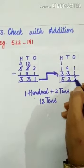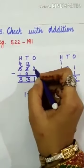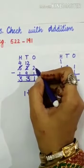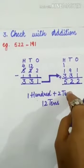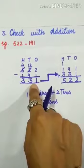So we got 522 after addition, which is same with this number. We subtracted from 522. If these two numbers are same, it means our answer is also correct.